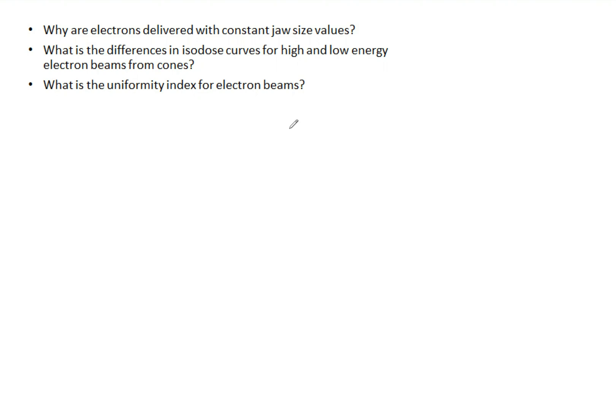Those have to be constant jaw sizes, otherwise a small change in jaw size can result in a very large dosimetry change, something clearly we do not want. So what is the difference between isodose curves for high and low energies? Let's go ahead and do a drawing. I'm much more of a visual learner so I think this hopefully will be helpful to you as well. So for low energy...